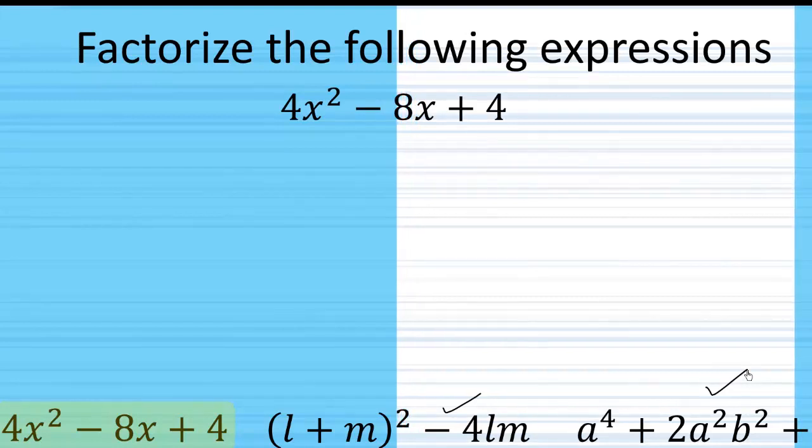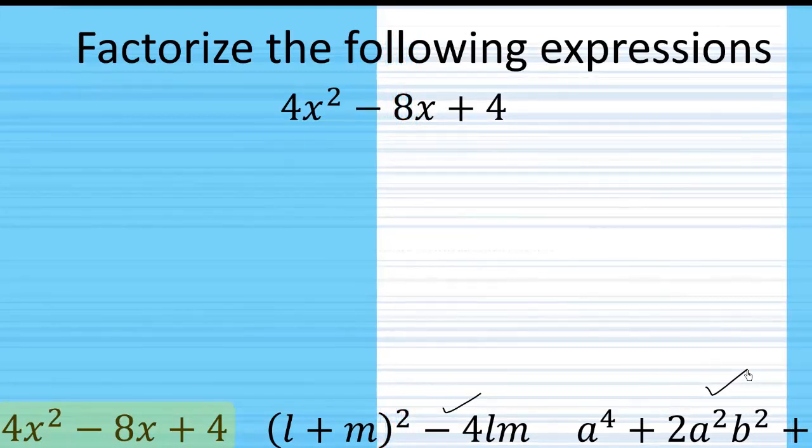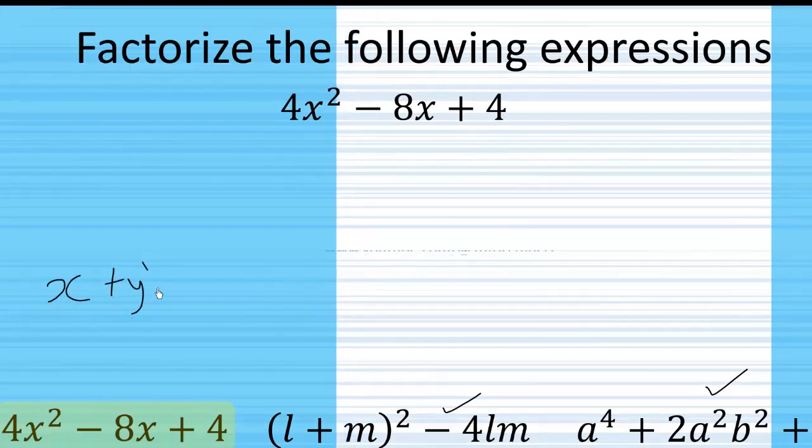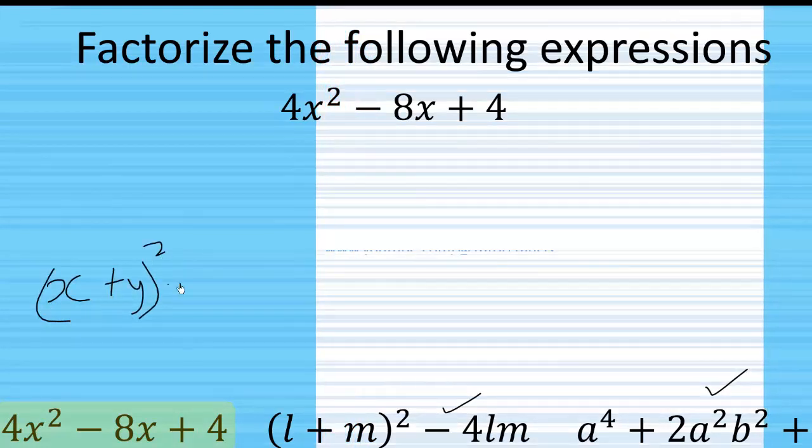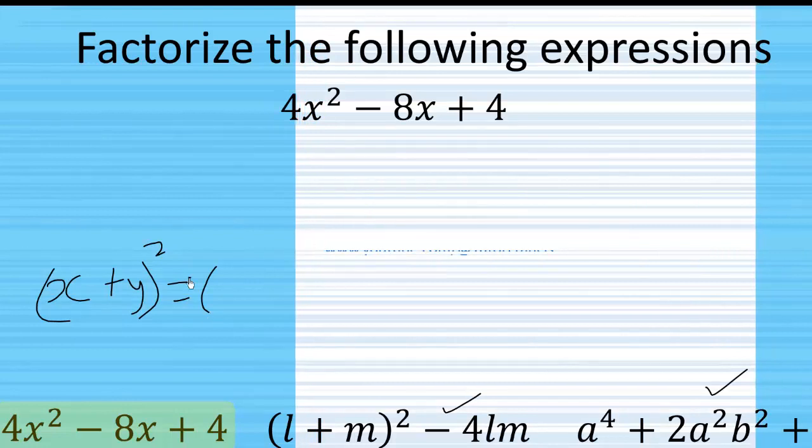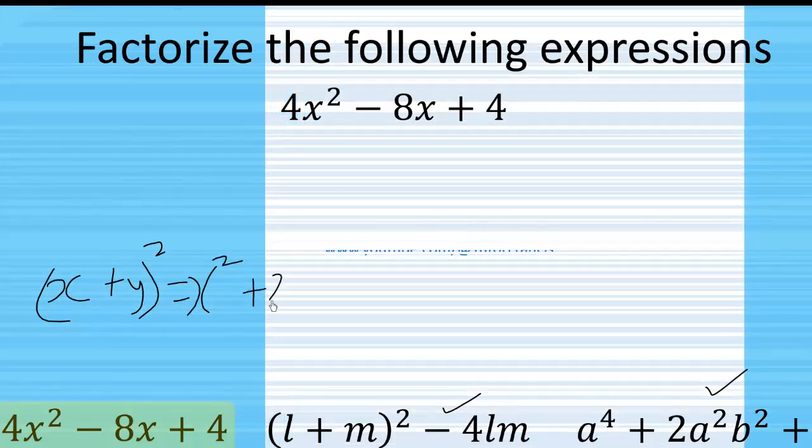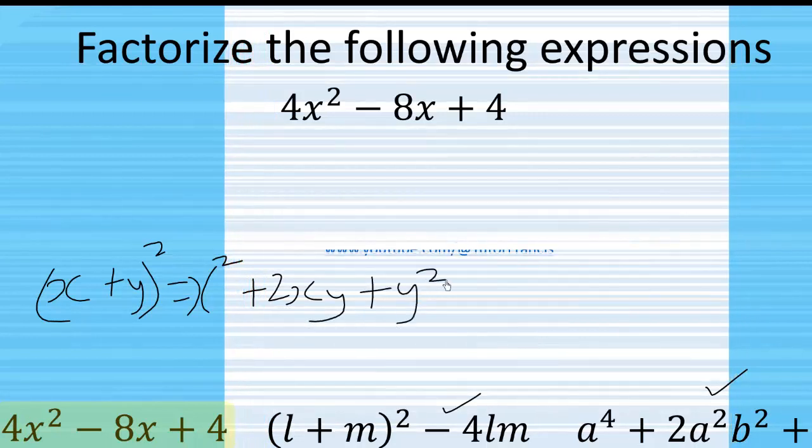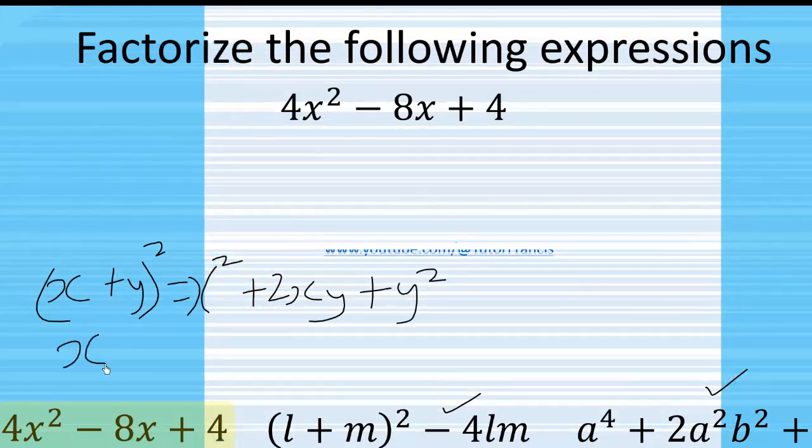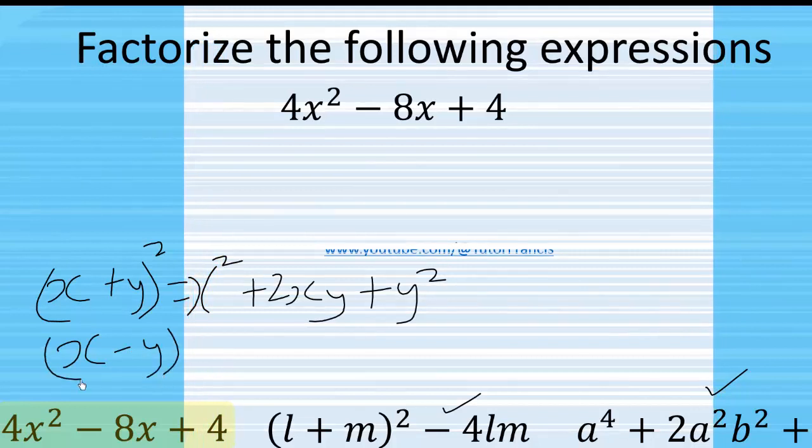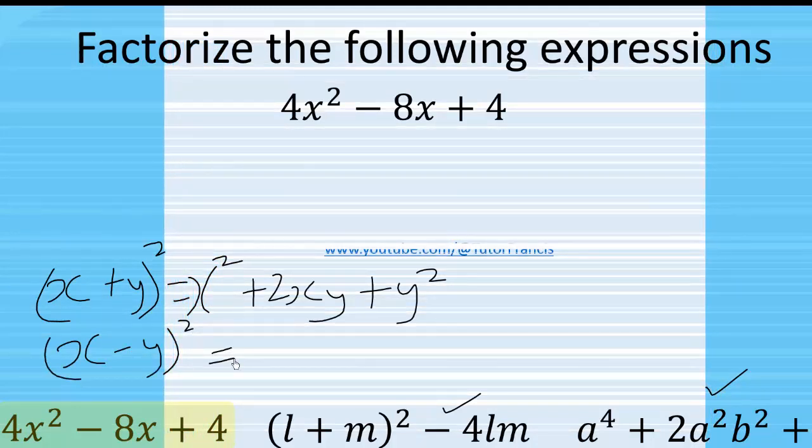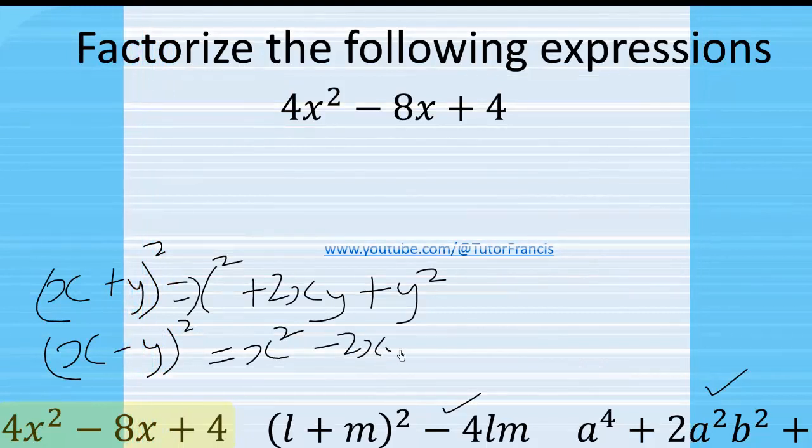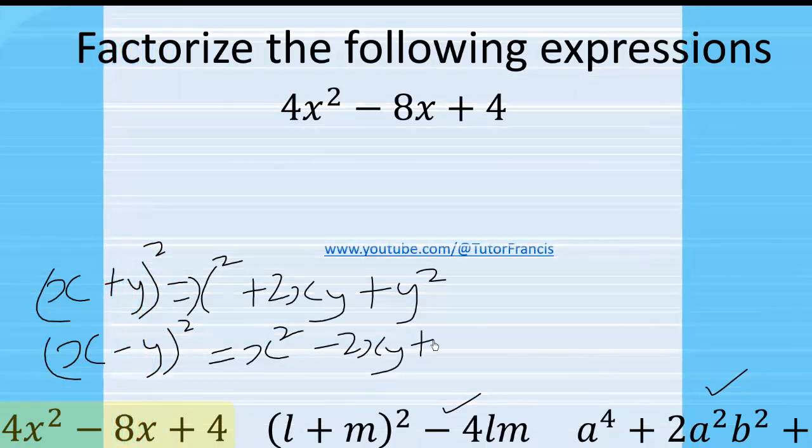We are going to use some identities. Recall that when we have something like x plus y all squared, it is equal to x squared plus 2xy plus y squared. Then we have, if we have x minus y all squared, this is equal to x squared minus 2xy plus y squared.